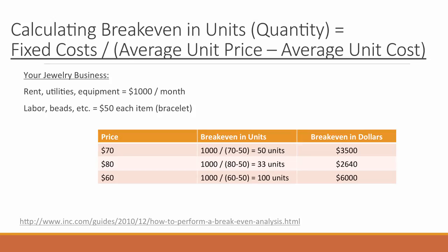What if you'd like to sell more by lowering your price? If you price your product at $60 and your cost is still $50, each unit only gives you $10 to go toward covering your fixed costs of $1,000. So now you would have to sell 100 units to break even.